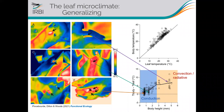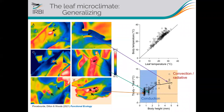Interestingly, the most pertinent body size metric here was body height, not body length or width. This is because body height directly relates to the thickness of the leaf boundary layer. We found that you need to go down to about 2.5–3 mm in body height to work with insects that will be influenced by leaf surface temperature patterns.